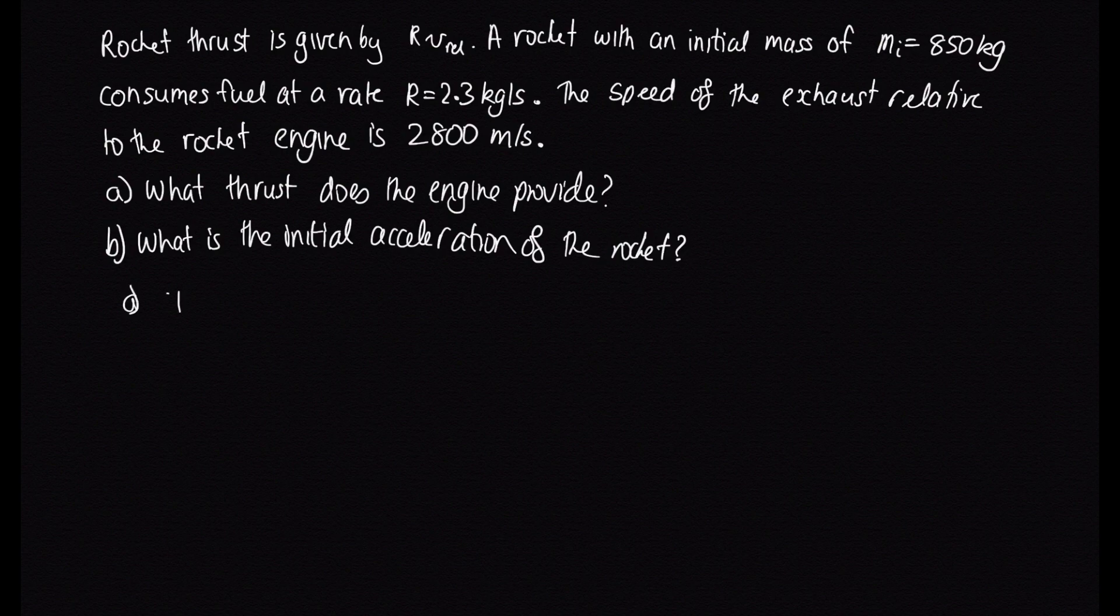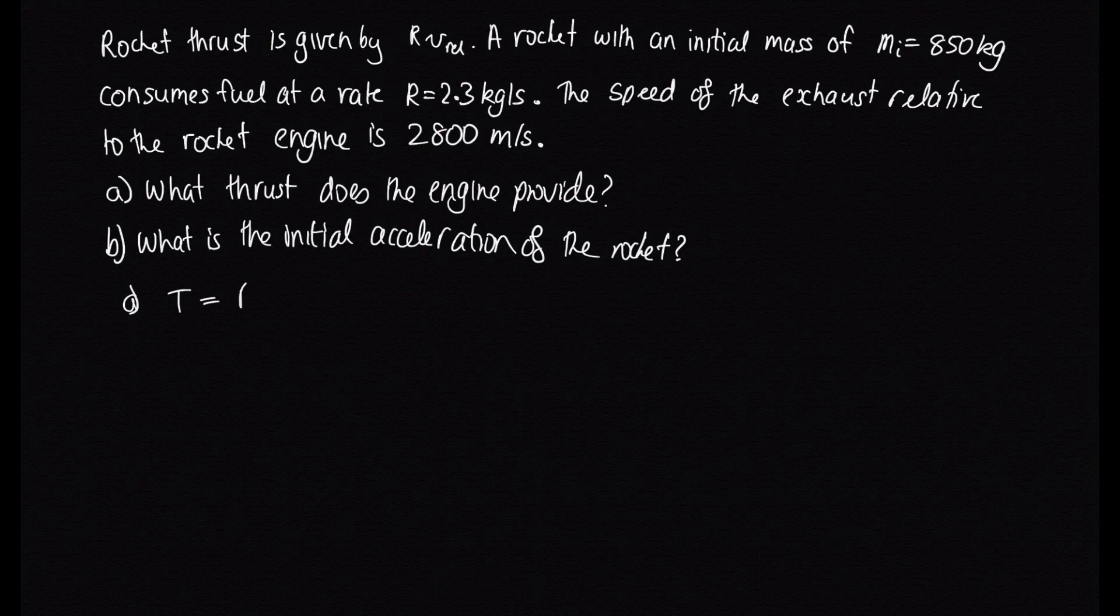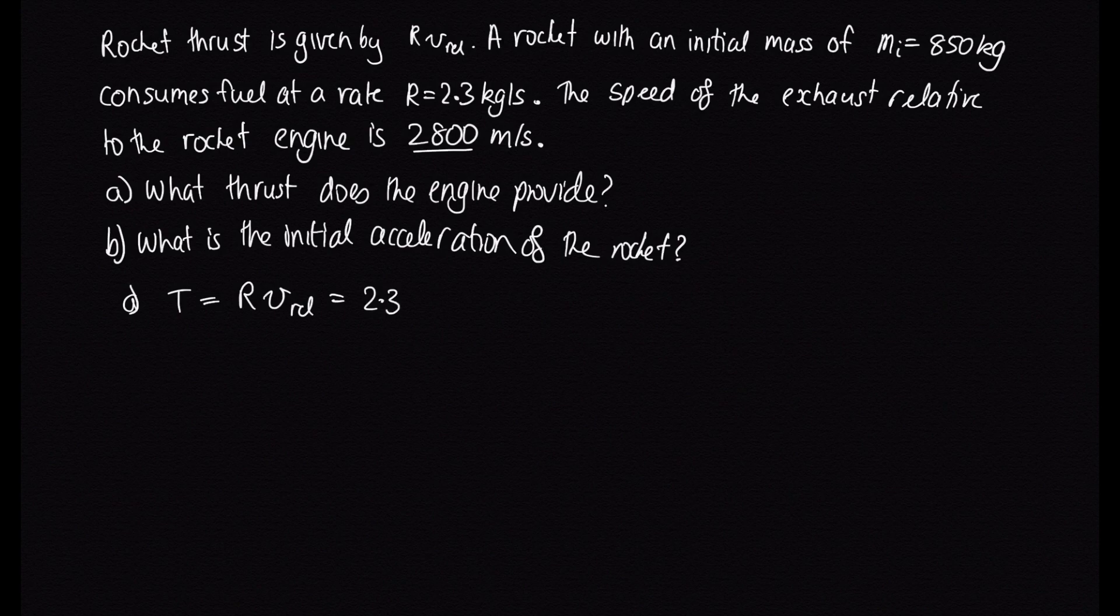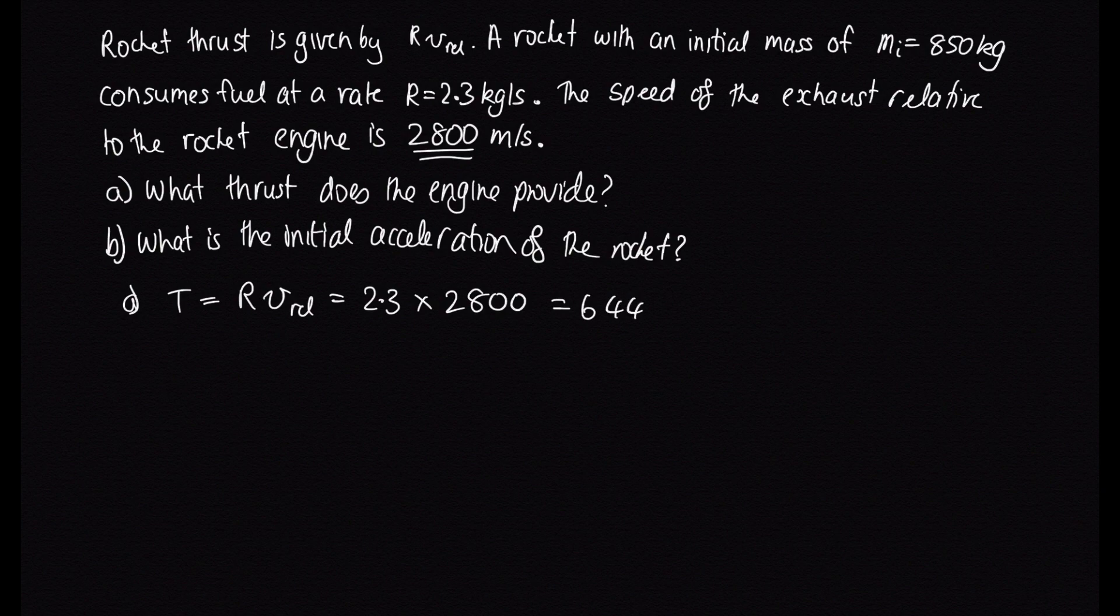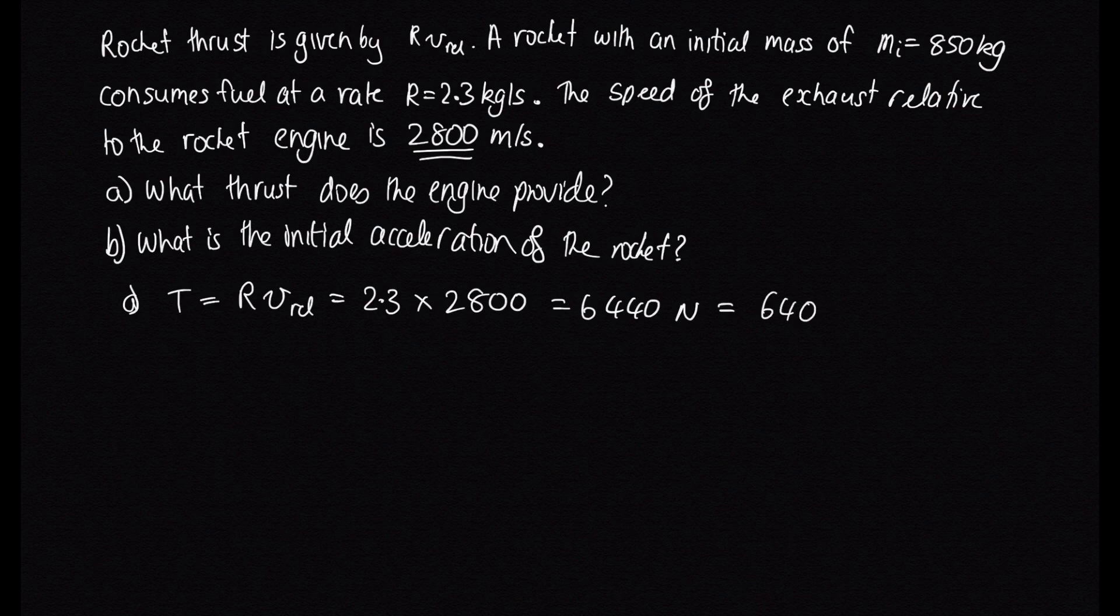So part A is pretty easy because we're told that thrust is given by r times v relative. And we're given r is 2.3 and this number here is v relative. So that's 2800. So substituting that into the calculator, we get 6440 newtons. And we should just give it to two significant figures. So that's 6400 newtons.